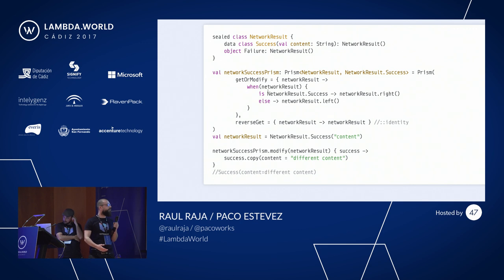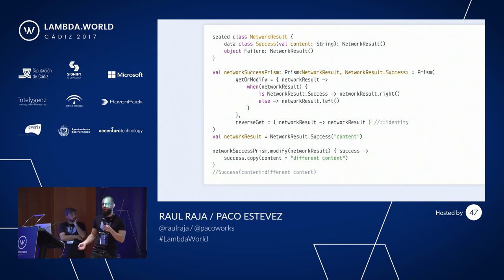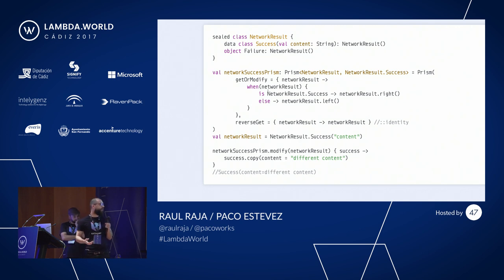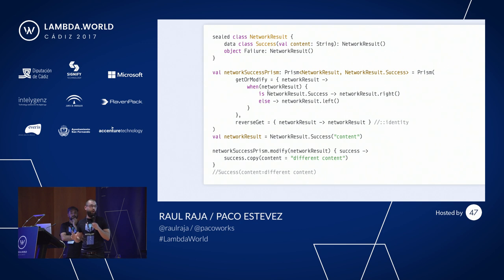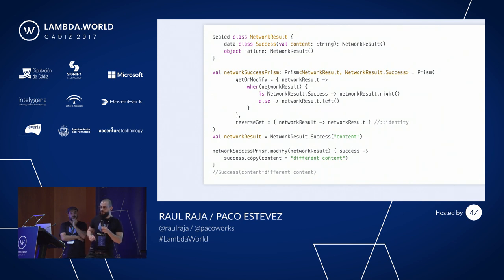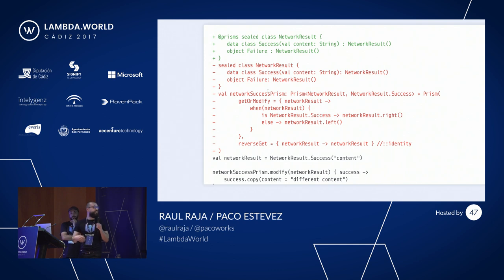With this Prism, we can now work on a NetworkResult without having to care if it is actually a success or a failure. We can lift our functions into this higher context of NetworkResult without dealing with all this boilerplate code. You could also compose it with another lens for NetworkResult to directly work on the content of the success value without having to deal with whatever the actual result is.